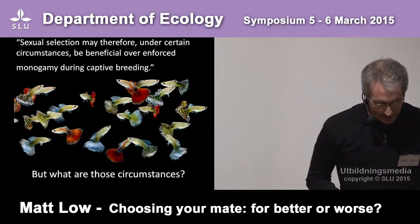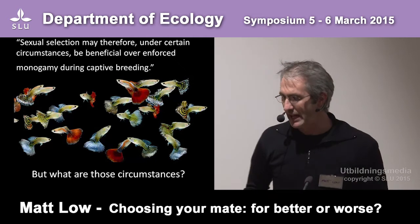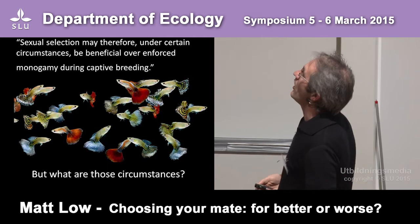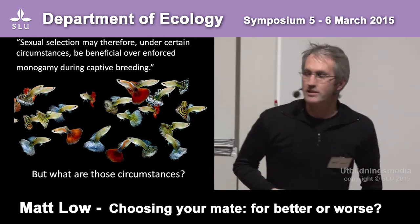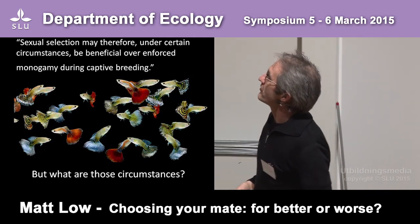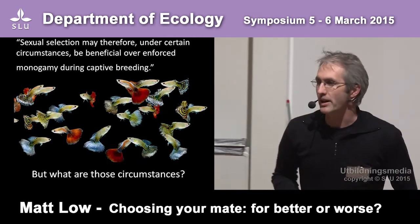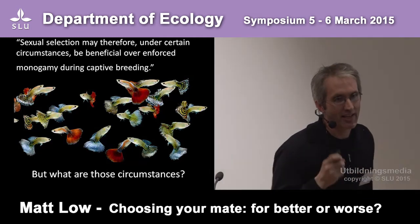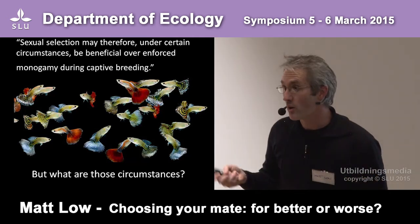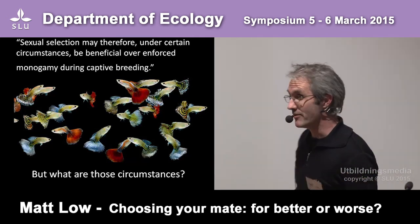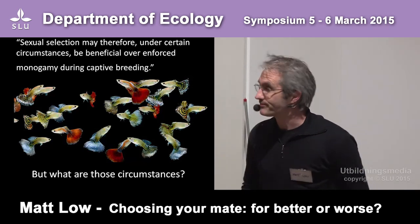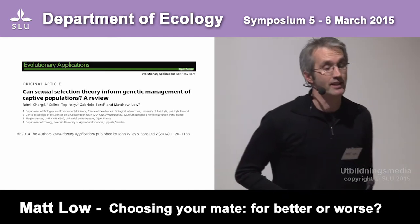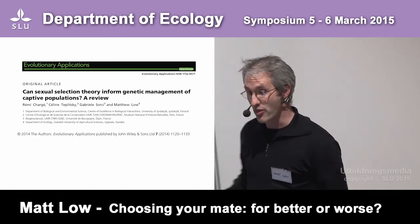So when people do studies on fish in a tank in a lab and they write things like 'sexual selection may therefore, under certain circumstances, be beneficial over enforced monogamy during captive breeding,' they are hiding the key question in plain sight. And the key question is: what are those circumstances? — which are never brought to the front. And that's pretty much what our paper was saying in about 8,000 words, and I've said it all in three minutes.